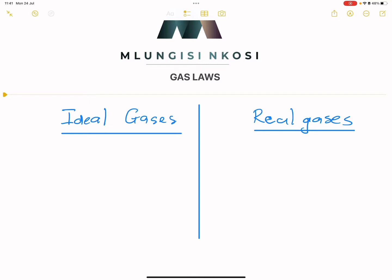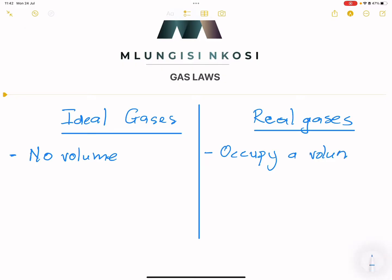The first thing that we know about ideal gases is that an ideal gas is a gas that essentially doesn't exist. We try to model real gases as ideal gases, and real gases are the ones that actually exist. When we look at ideal gases, we say the molecules occupy no volume. With a real gas, it does occupy a significant amount of volume.